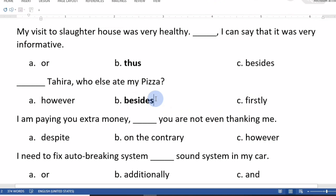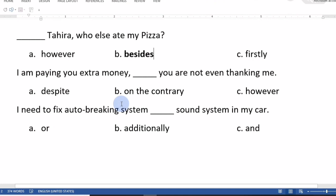I am paying you extra money, you are not even thanking me. The options are despite, on the contrary, or however. On the contrary is the right answer. On the contrary, you are not thanking me.